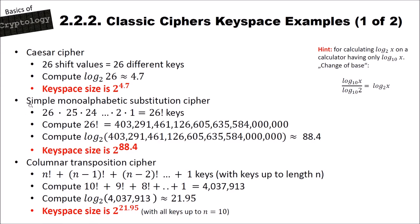For the simple monoalphabetic substitution cipher, the keyspace is computed as 26 × 25 × 24 × ... × 2 × 1, which is 26 factorial — and that equals a really huge number. Computing the logarithm base 2 of this gives about 88.4, so the keyspace size is 2 to the power of 88.4. This means you cannot search through the complete keyspace of this cipher, but as we know, it can still be broken using statistical and frequency analysis.